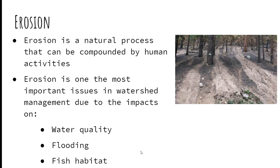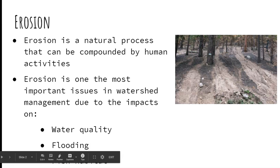Erosion adds more sediments to the stream and can increase the incidence of flooding, because once you get more sediment in the stream and the stream can't hold all the water, the water is going to overflow. Then it's going to impact fish habitat — fish do not like to live in cloudy, sediment-filled water.